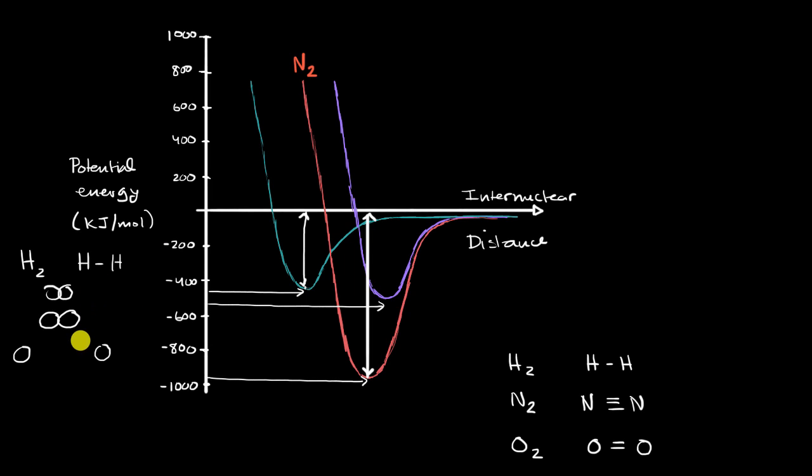Then the next highest bond energy, if you look at it carefully, it looks like this purple one right over here. And so just based on bond order, I would say this is a good candidate for O2. And then the lowest bond energy is this one right over here. And so just based on the bond order here, it's just a single covalent bond, this looks like a good candidate for diatomic hydrogen.